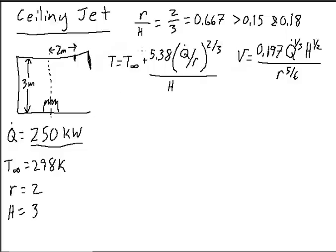So first thing we need to do is calculate an R over H value. I've written out part of this analysis already to save time in the video. But the R over H value will tell you which set of Alpert's correlations equations to use. So in this case we use 2 over 3 which equals 0.667 approximately, and that's greater than both 0.15 and 0.18.